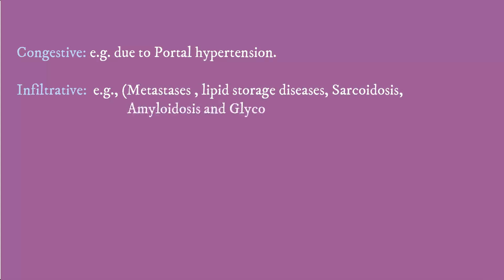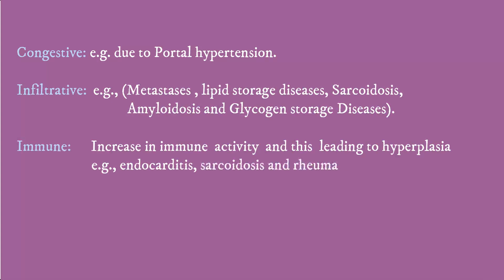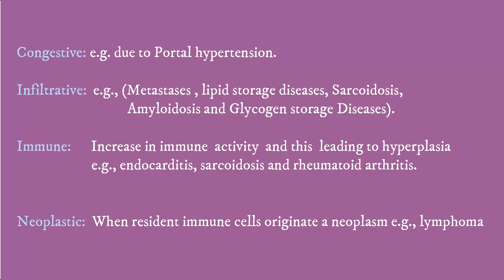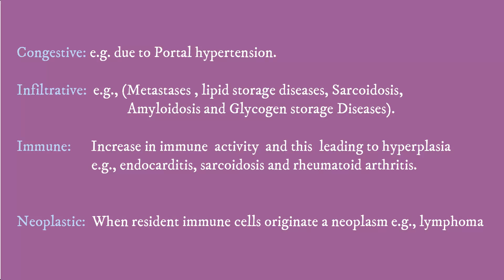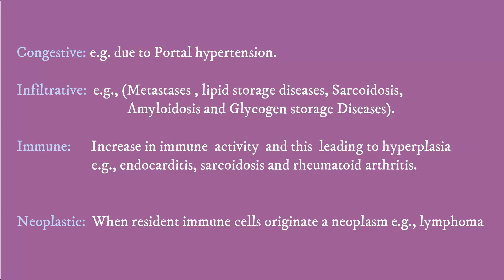Splenomegaly can be classified on a pathophysiologic basis: congestive, for example due to portal hypertension; infiltrative, for example metastasis or lipid storage diseases; immune, meaning increased immunologic activity leading to hyperplasia, for example endocarditis, sarcoidosis, or rheumatoid arthritis; and neoplastic, when resident immune cells originate a neoplasm, for example lymphoma.